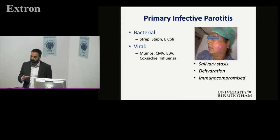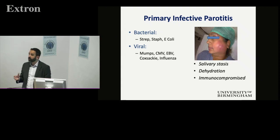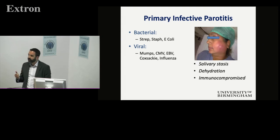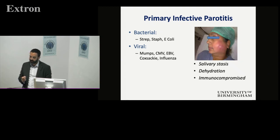Bacterial infections might be seen particularly in a patient that's been on ITU and intubated for a long time. They've got reduced salivary flow because they've got no stimulus going through their mouth. They get stasis of saliva, enter that cycle of reduced flow, inflammation, and ascending bacterial infection — and then you get a big, hot, swollen parotid gland.